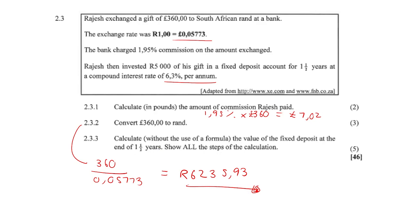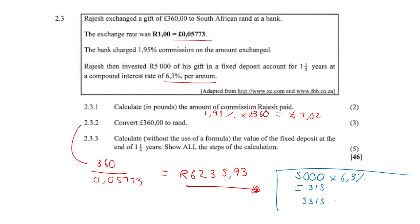Question 2.3.3: Calculate without the use of a formula the value of the fixed deposit at the end of one and a half years (18 months), showing all steps. It's compound interest — we add the interest to the principal. He invested 5000 Rands at 6.3%, so at the end of year one he gets 315 Rands interest, giving a new principal of 5315.